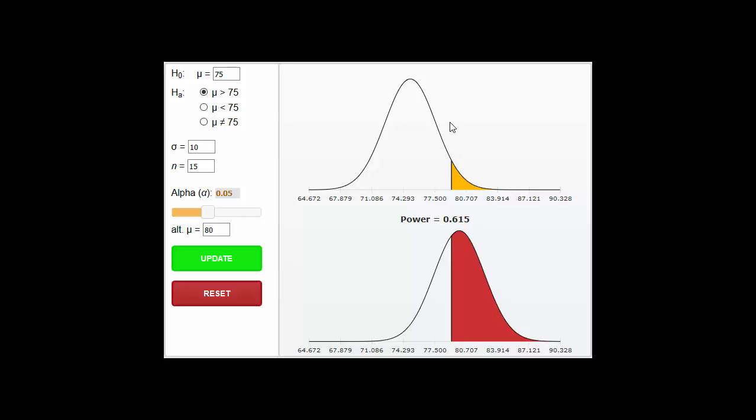So on the upper part here, the unshaded part is the chance that we will make the right decision. And the yellow or orange, whatever color that is, that's the chance of a type 1 error or alpha. It's 0.05.